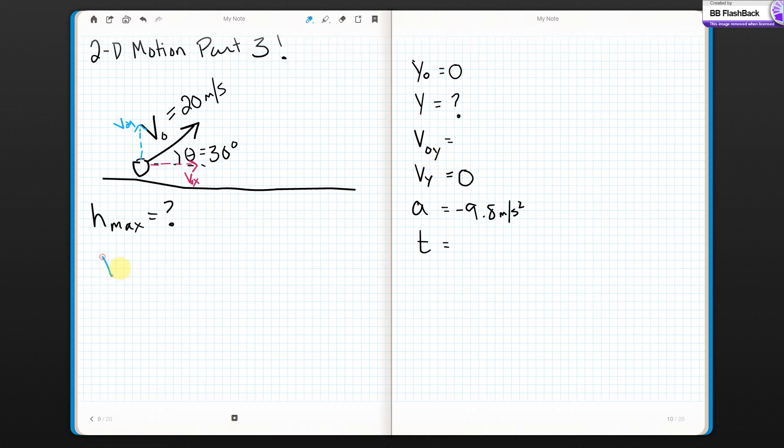Now, I'm only concerned for this problem with the Y component of initial velocity, so I'm just going to do that. I know that the Y component of any vector is the vector magnitude times the sine of the angle it makes with the X axis. So, in this case, that would be 20 meters per second times the sine of 30.